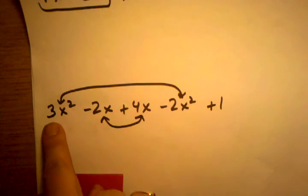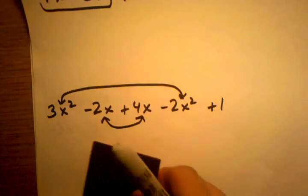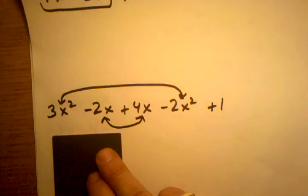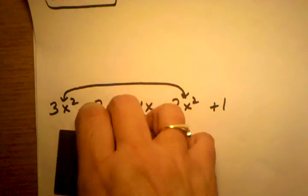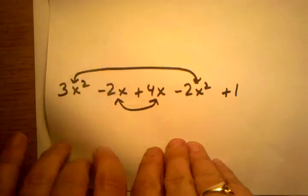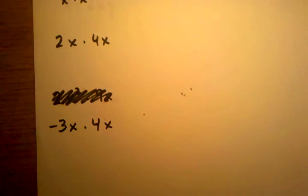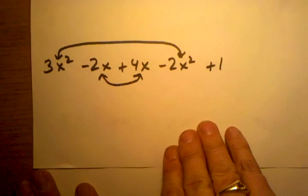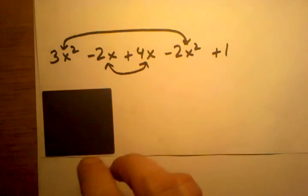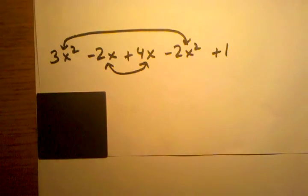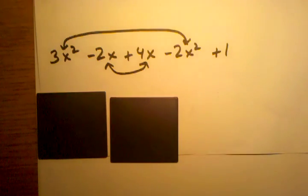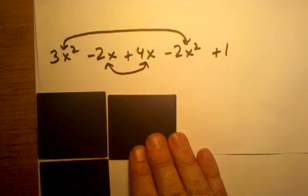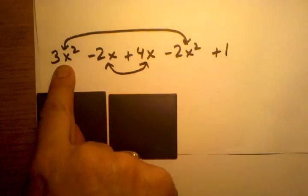In the beginning of this problem it says 3x squares. So here's 1x square. So here's 1x squared, 2x squared, 3x squared. So there's my 3x squares represent 3x squared right there.